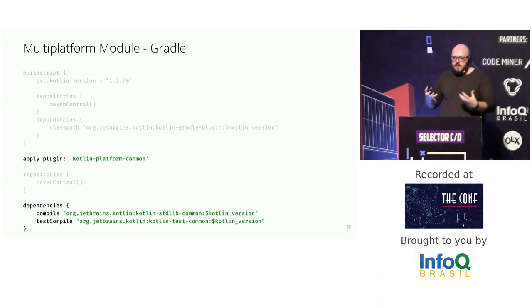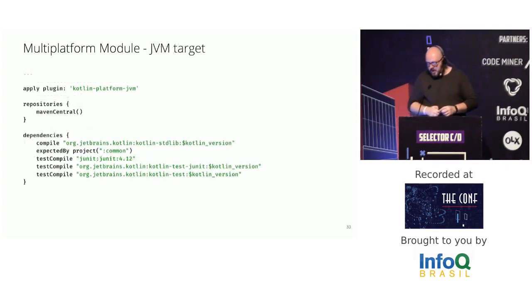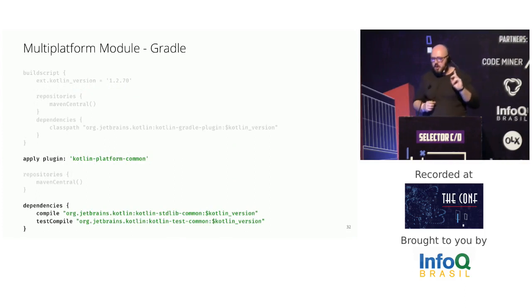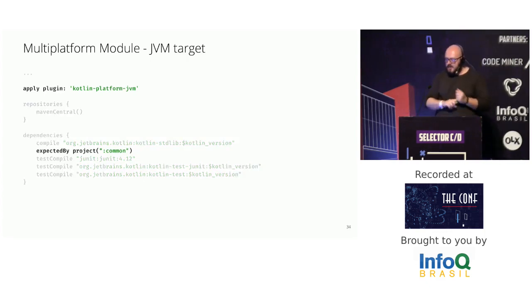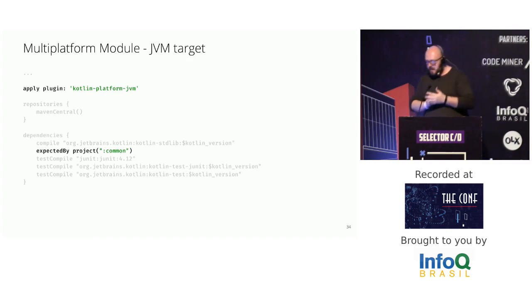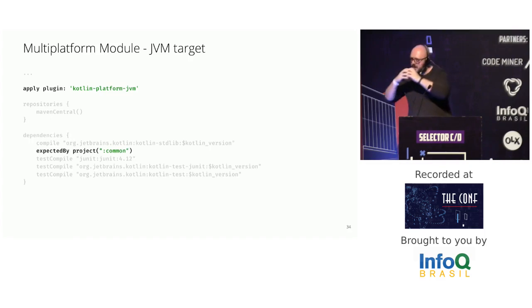Why use the common version? This allows the compiler to plug in the specific implementation details for each platform when the shared code is run on any specific platform. So on the JVM module, I specify the plugin kotlin-platform-jvm, and the trick is the dependency on the common module using the expectedBy type of dependency, which tells the compiler that this module is compiling the common code to a specific platform.